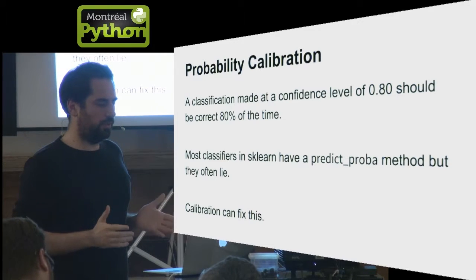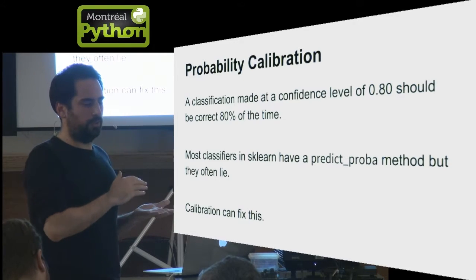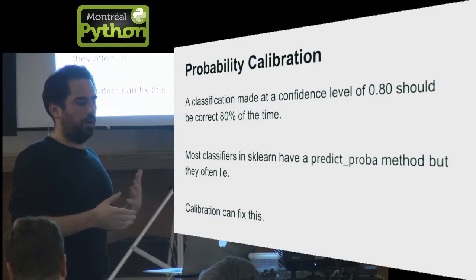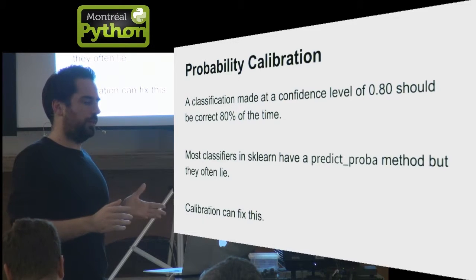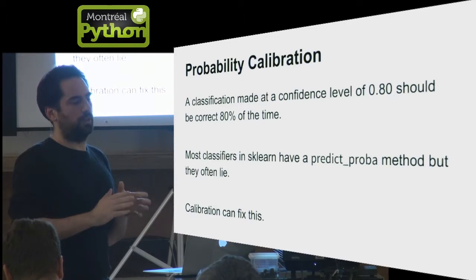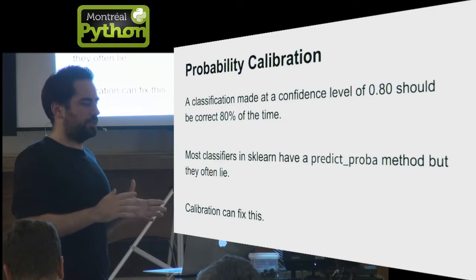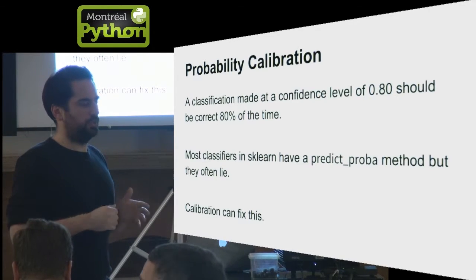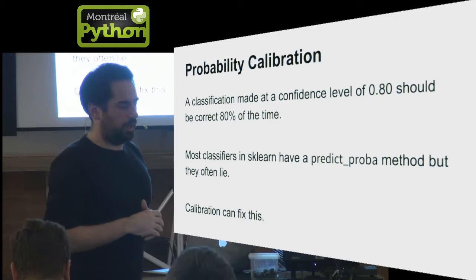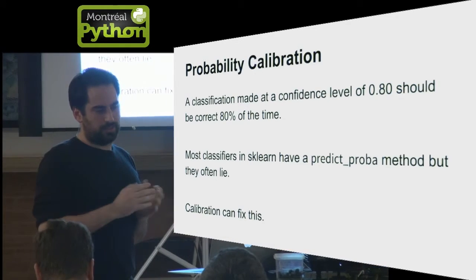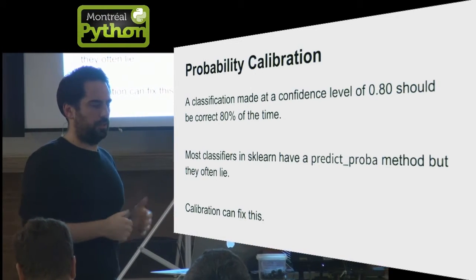A good confidence level would mean that if it is at 0.8, from all of the classifications that are made at 0.8 confidence level, 80% of them should be correct, should be positive for instance. This would be a calibrated confidence level.